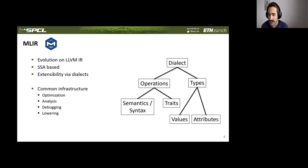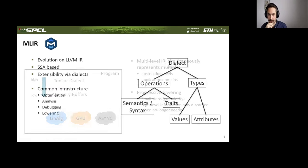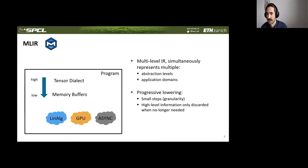So last year, there's a new compiler infrastructure that emerged from a team at Google called MLIR, or multi-level intermediate representation. It shares a lot of similarities with LLVM in that it's SSA-based, but it differs in a fundamental way, and that is extensibility. In MLIR you can easily define extensions via dialects, which contain new operations with custom semantics, new types, and so on. The reason that MLIR is a multi-level intermediate representation is that you can simultaneously represent multiple abstraction levels and also multiple application domains.